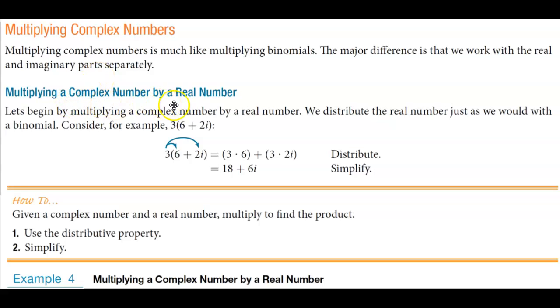Multiplying a complex number by a real number. Let's begin by multiplying a complex number by a real number. We distribute the real number just as we would with a binomial. Consider for example 3 times (6 + 2i).